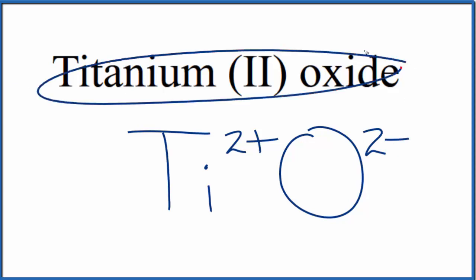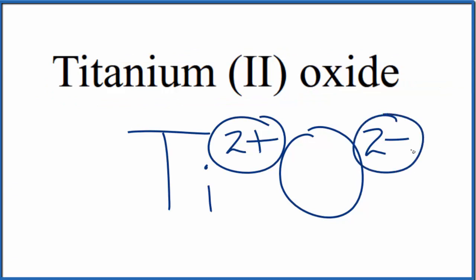And since this is a neutral compound, it doesn't say ion after it, these charges need to add up to zero, give us a net charge of zero. 2 plus, 2 minus, that adds up to zero.